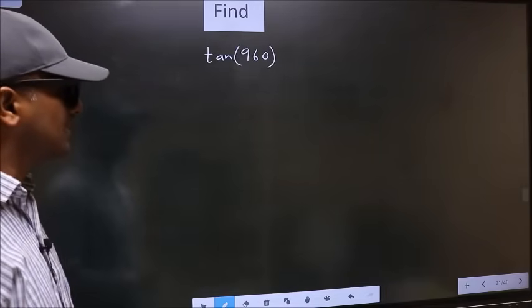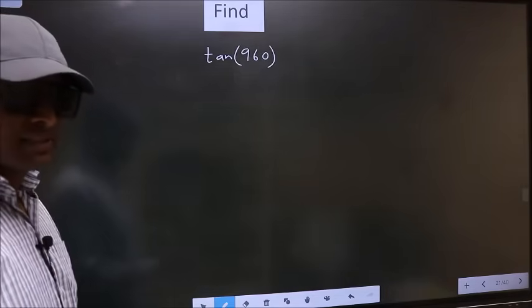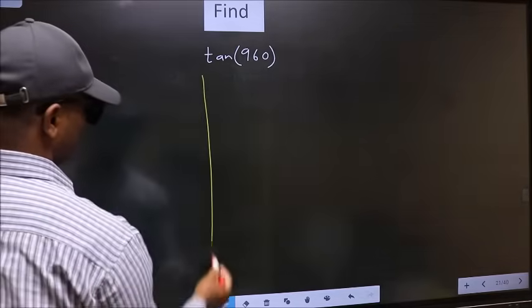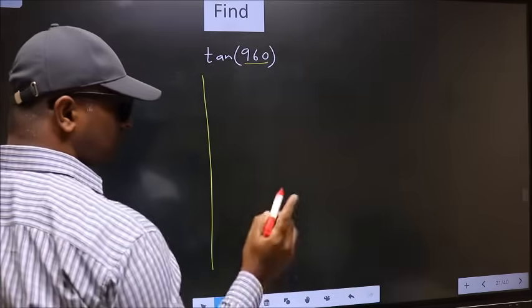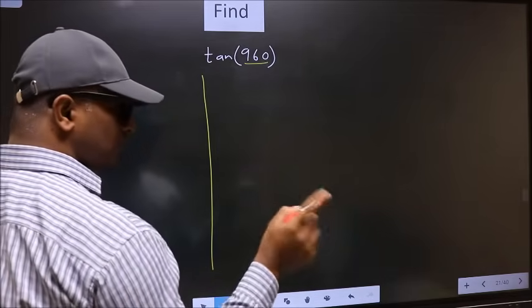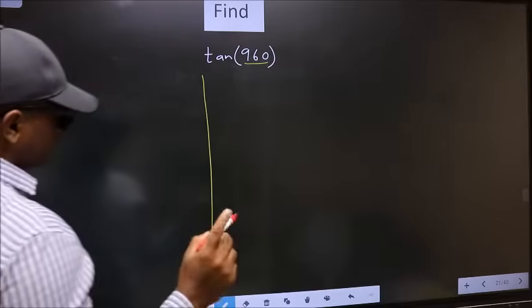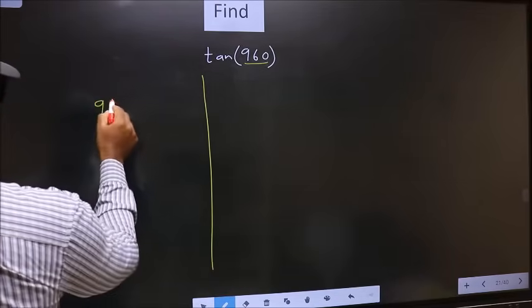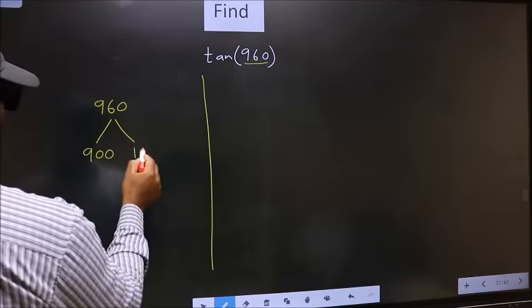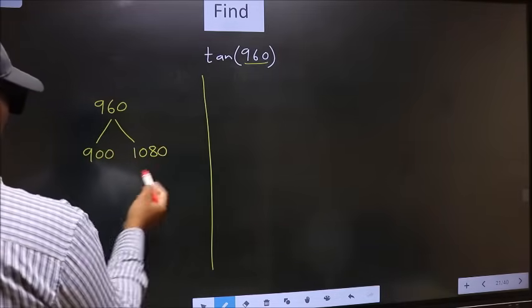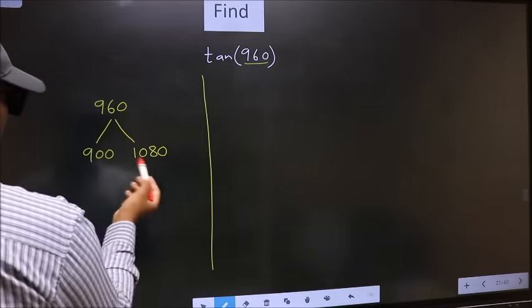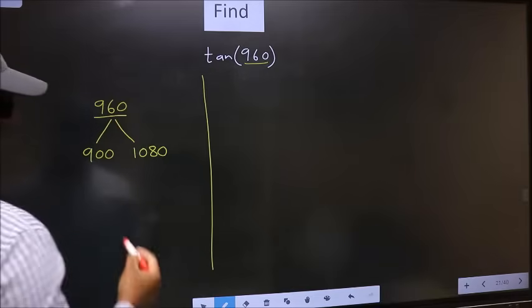Find tan 960. To find this, we should follow this method. See, here we have 960. Now we should check: 960 lies between which two multiples of 180? What I mean is 960 lies between 900 and 1080. This is 180 × 5 and this is 180 × 6. Between these two numbers, 960 lies.